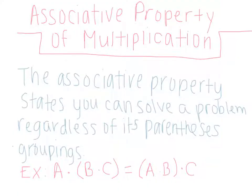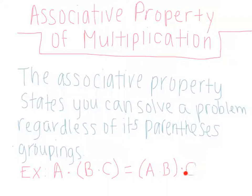Now we go on to our second property, the associative property of multiplication. The associative property states that you can solve a problem regardless of its parentheses groupings. An example would be a times (b times c) is the same as saying (a times b) times c. All you're doing is changing the parentheses groupings to different places, which in reality doesn't really change your answer.